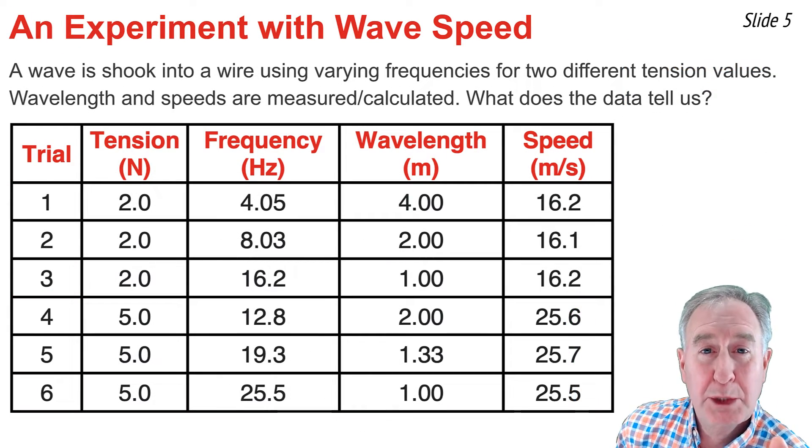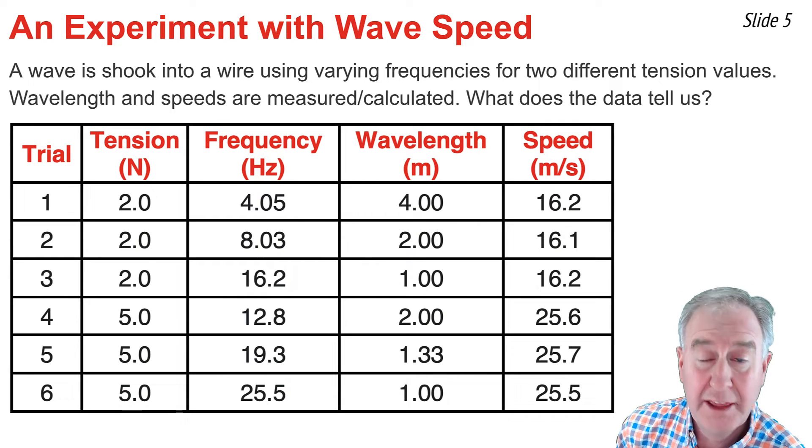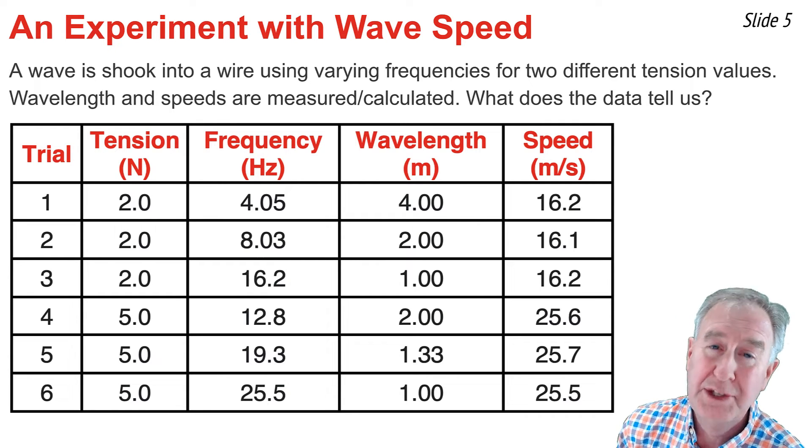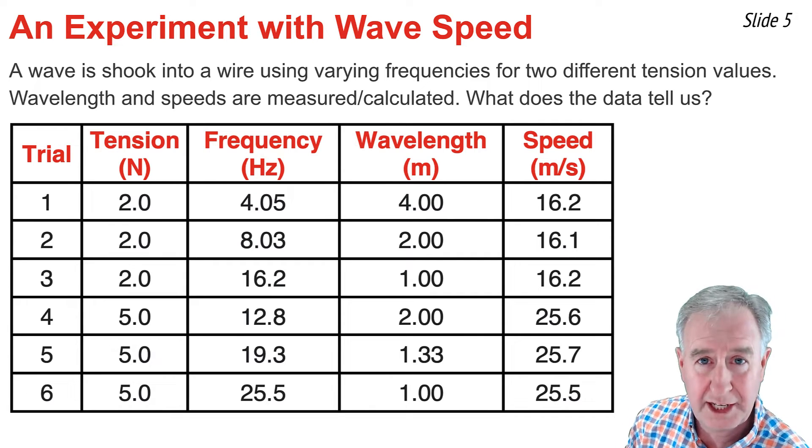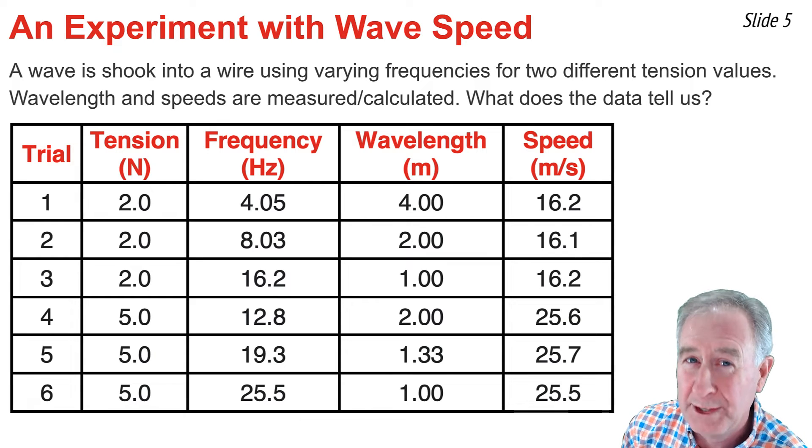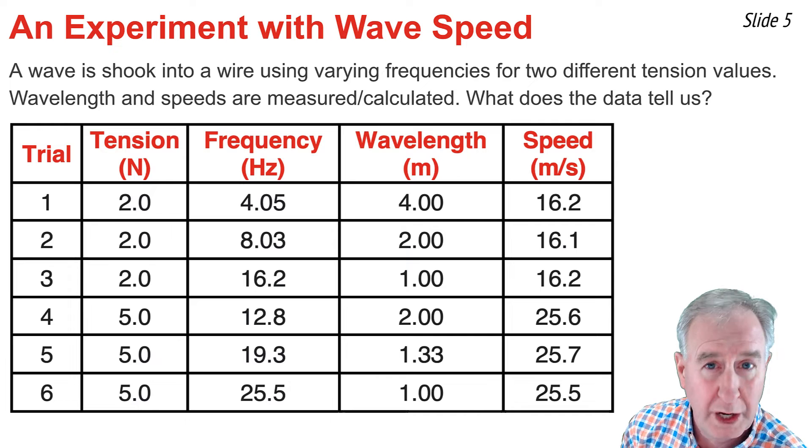Let's consider an experiment in which we have a wire that's held at two different tension values or tightnesses and then vibrated at varying frequencies. The wavelength is measured and the speed is calculated, and we end up with the data set you see here. Let's ask the question, what does the data tell us, particularly about the speed of waves and wires?